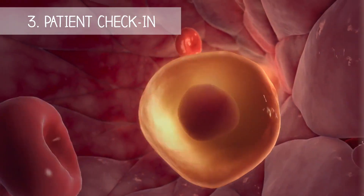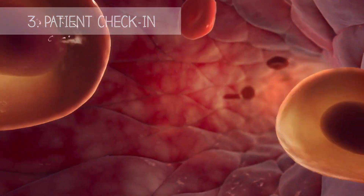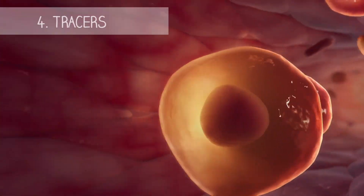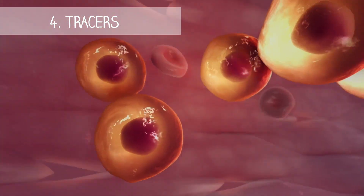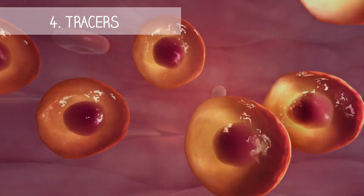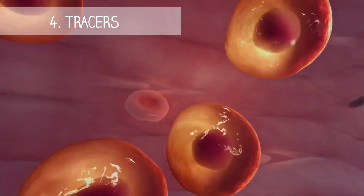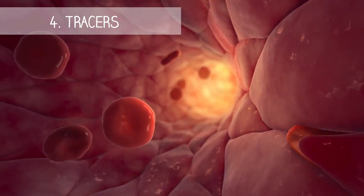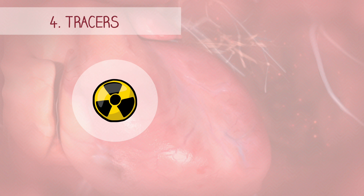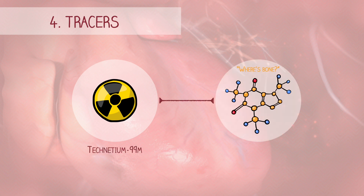This substance circulates through the bloodstream and is absorbed by the bones. A different type of radioactive substance is used for every procedure. In this case, we often use the radioactive tracer technetium, and combine it with a bone-seeking compound, methylene diphosphonate.